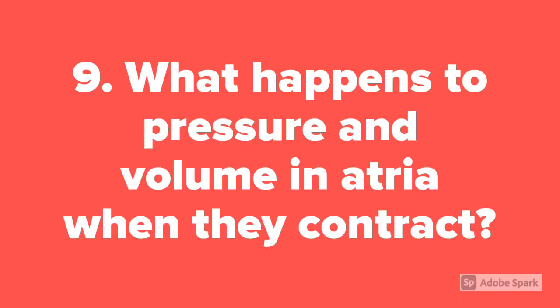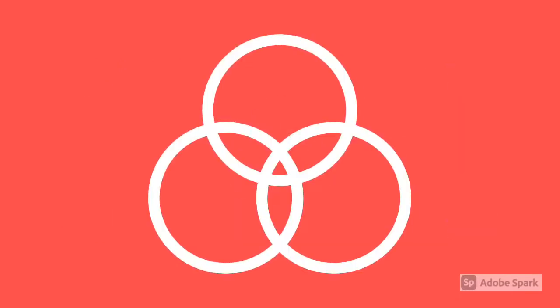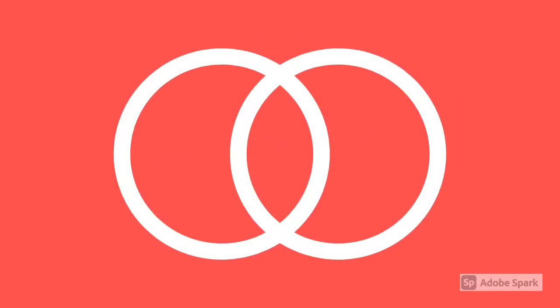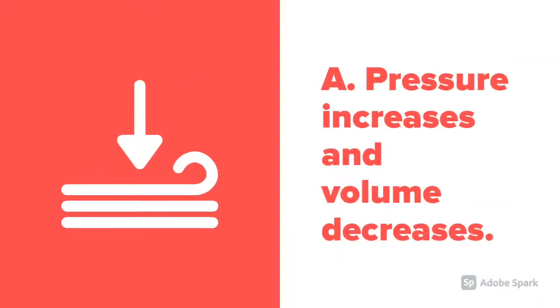Question 9. What happens to pressure and volume in the atria when they contract? Pressure increases and volume decreases.